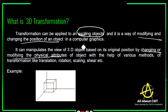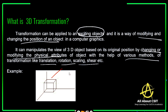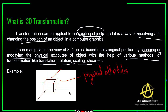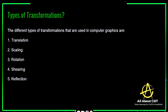Based on its original position, by changing or modifying the physical attributes — whatever the exact coordinates are — of an object, with the help of various methods of transformation like translation, rotation, scaling, and shearing. For example, this 3D object is a cube, which has XYZ plane coordinates. These coordinates are called physical attributes. The different types of transformations are translation, scaling, rotation, shearing, and reflection.